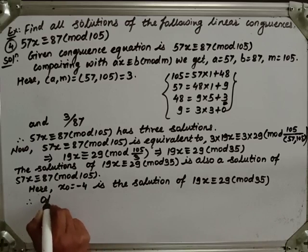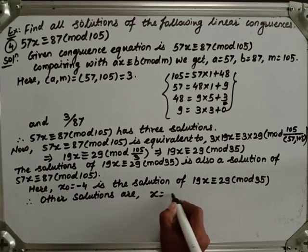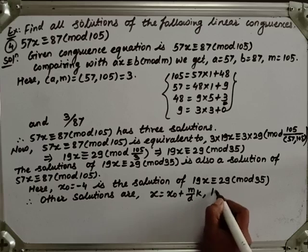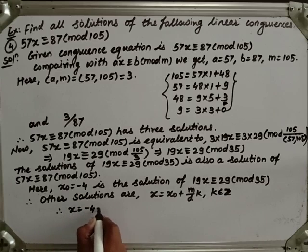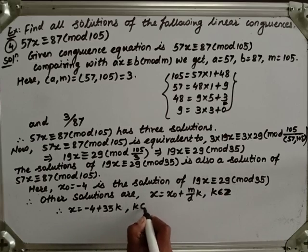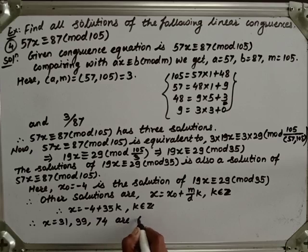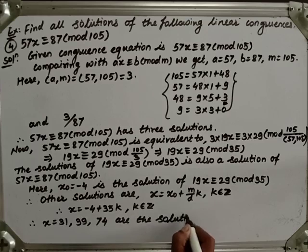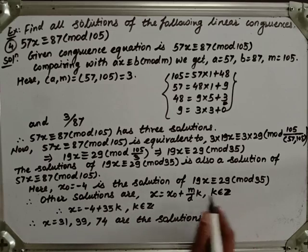Therefore the other solutions are x = x₀ + (m/d)×k, where k is an integer. So x = -4 + 35k, where k is an integer. Putting k = 1 we get 31, k = 2 gives 66, and so on — obtaining solutions modulo 105.